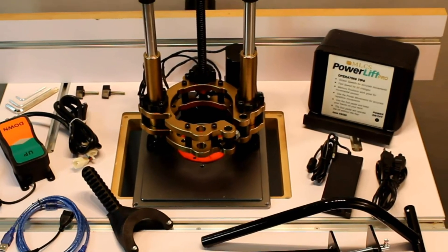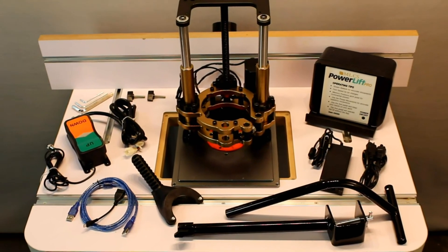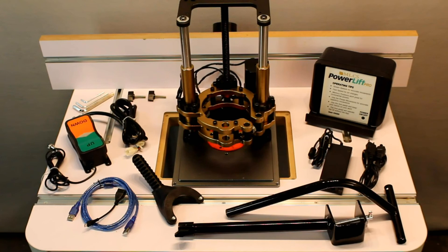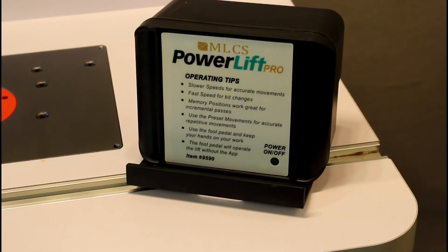This video covers the setup and components of the PowerLift Pro from MLCS Woodworking. The first component we'll look at is the electronic control box or ECB.